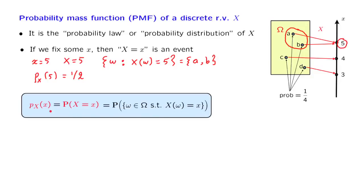A few things to notice. We use a subscript capital X to indicate which random variable we're talking about. This will be useful if we have several random variables involved. For example, if we have another random variable on the same sample space, capital Y, then it would have its own probability mass function, denoted with its own notation. The argument of the PMF, which is little x, ranges over the possible values of the random variable capital X. So here we're really dealing with a function, a function that we could denote just by p with a subscript X — this is the function, as opposed to the specific values of this function.